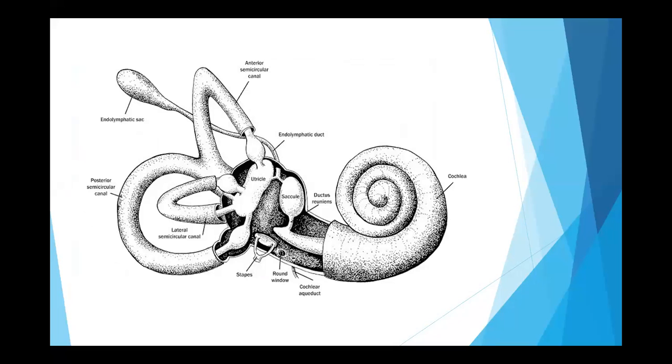Here, the bony labyrinth, the bony part is a little bit removed so that we can see what's inside. The main thing which I want you to look at is that the utricle and the saccule are not in a single compartment. They are two separate things connected only through the endolymphatic duct.